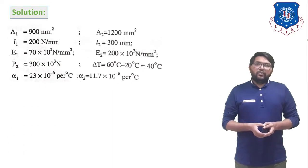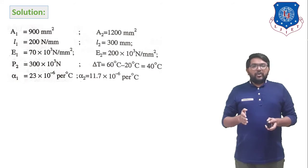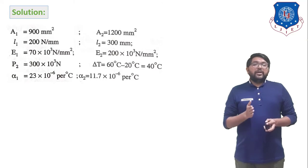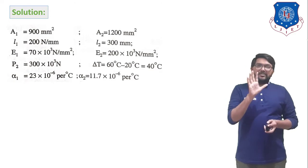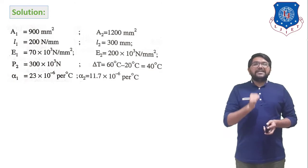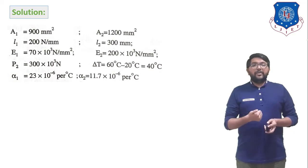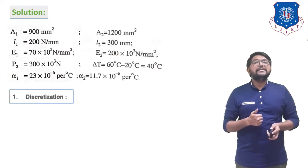Solution. Write down the given data: A₁ = 900 mm², A₂ = 1200 mm², L₁ = 200 mm, L₂ = 300 mm, E₁ = 70×10³ N/mm², E₂ = 200×10³ N/mm², P₂ = 300×10³ N. Delta T = 60 − 20 = 40°C. Alpha₁ (aluminium) = 23×10⁻⁶, alpha₂ (steel) = 11.7×10⁻⁶.